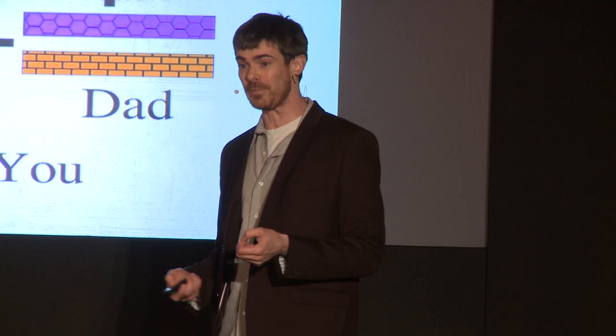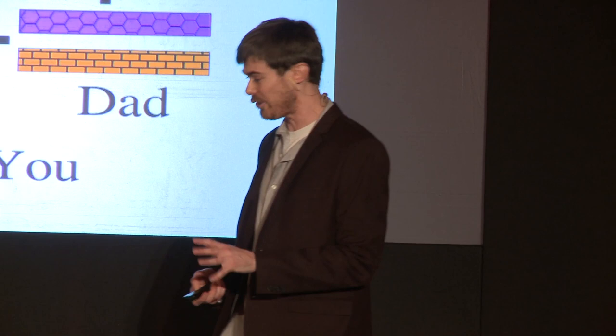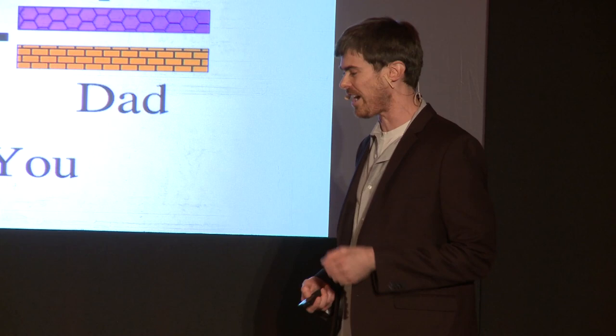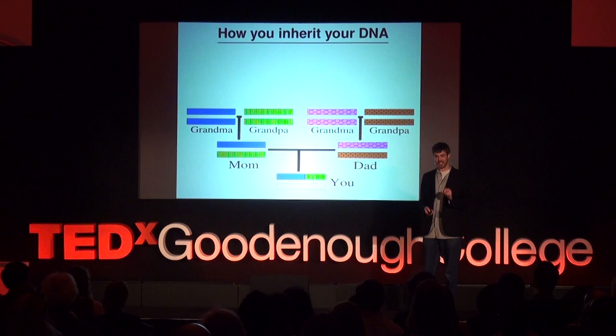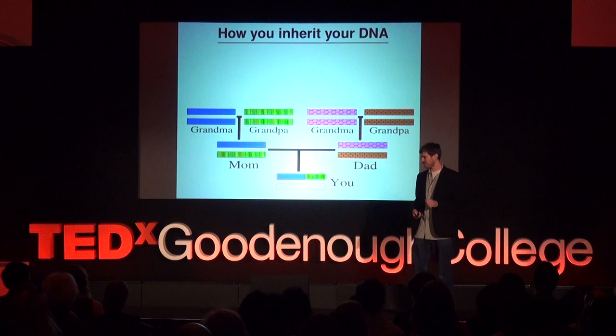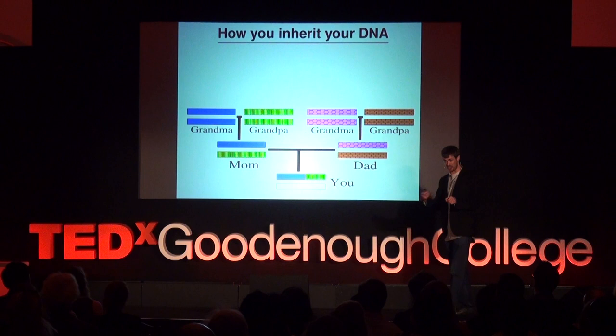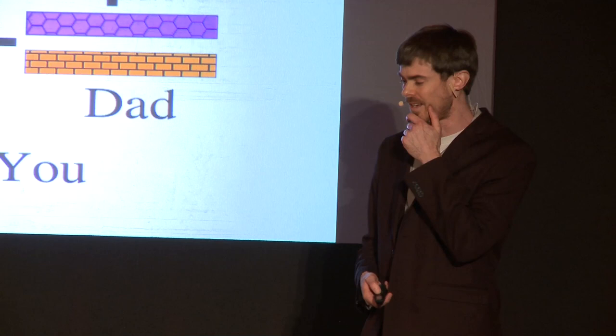I can do the same thing with your grandparents — assign each a unique color and then color you accordingly. Mom and dad each get a chromosome from each of their parents and pass one along to you. Now it turns out that mom, for example, doesn't just pass along the blue or the green, but often some sort of mixture of the two. This is because of a process known as recombination — you don't need to know anything about it other than that it causes this to happen.